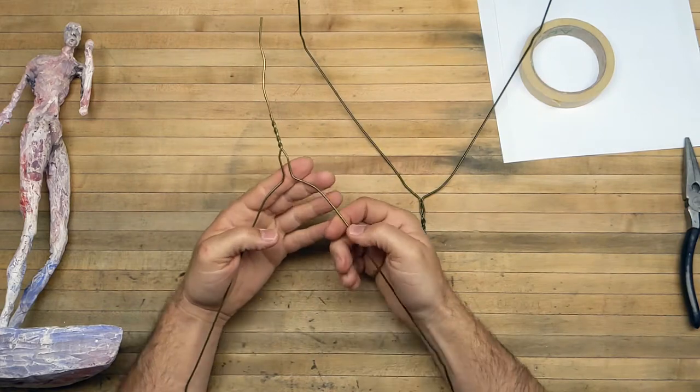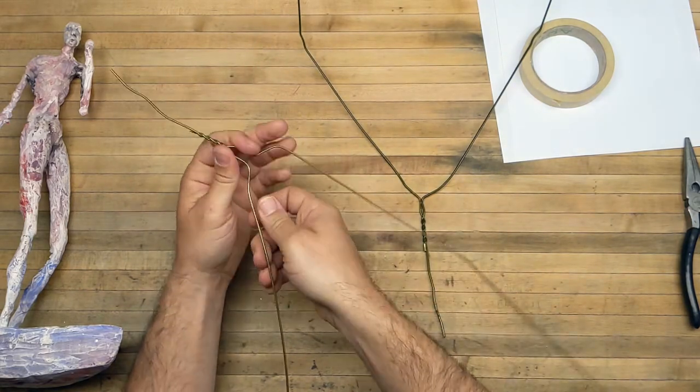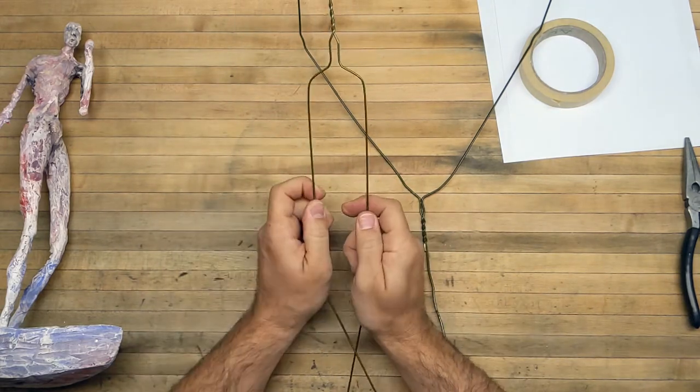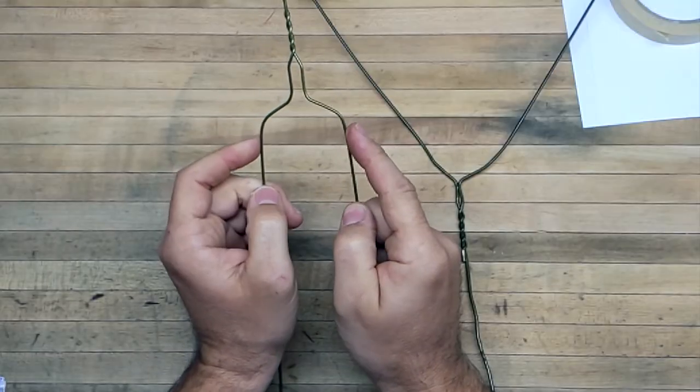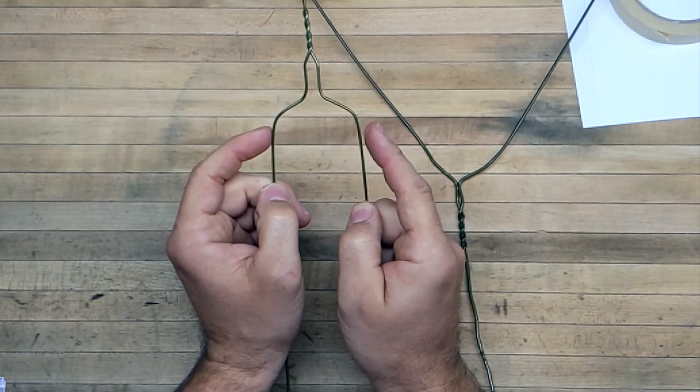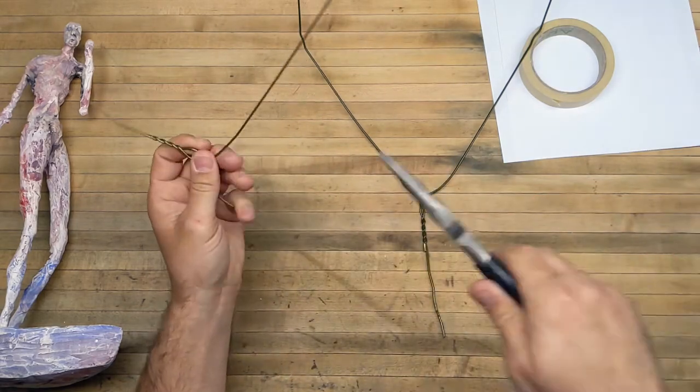You can play around with these proportions, but that is kind of the maximum length of your torso right there. You could play around with the hips and bring this out more, but I'm going to recommend that you keep them fairly narrow because remember this is just an armature, not the finished figure.